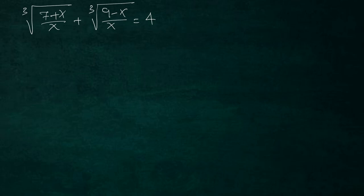Hello guys, welcome to the channel. Today we have this problem from a math olympiad I found in a book from Russia. We have to find the value of x, and since x appears in the denominator, we first need x to be different from 0.